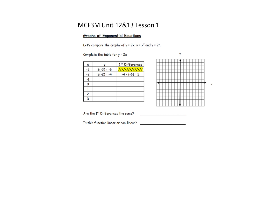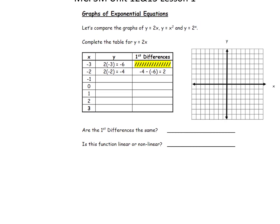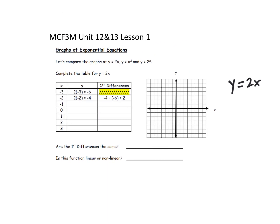So let's start by graphing y equals 2x. In order to make a graph, perhaps we'll make a table of values. We're just picking some numbers for x in our table, and then we're going to multiply each x value by 2 to get the y value. The first two are done for you: 2 times negative 3 is negative 6, and 2 times negative 2 is negative 4.